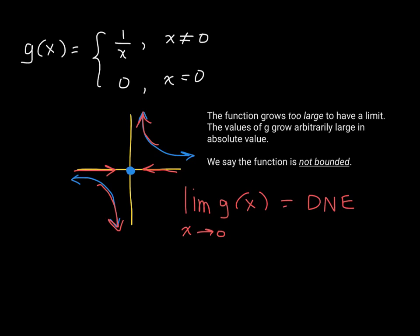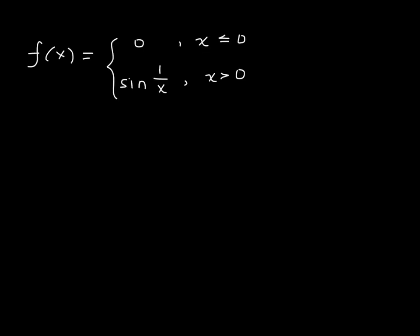Let's look at one more function whose limit does not exist as x approaches zero, for a different reason. This is a piecewise defined function: you have a constant function to the left of zero, where f(x) = 0 — the function is right on the x-axis for x ≤ 0. To the right of zero, you have sine of 1/x. Go ahead and pause the lesson and generate the graph for this function f.